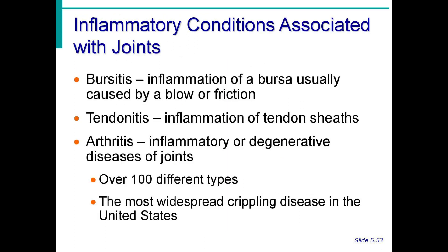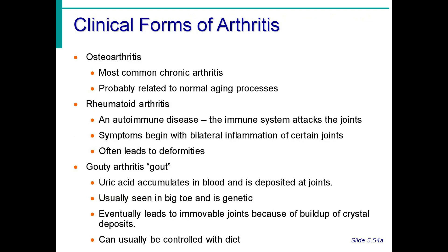These are inflammatory conditions associated with joints. The most common is arthritis, an inflammatory or degenerative disease of the joint. The clinical forms include: osteoarthritis, which is the most common; rheumatoid arthritis, which is an autoimmune disease; and gout or gouty arthritis, which involves a deposit of uric acid in the joint.